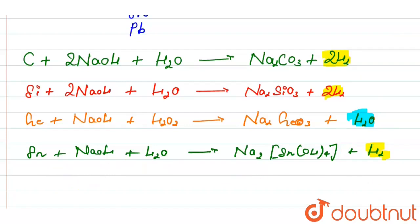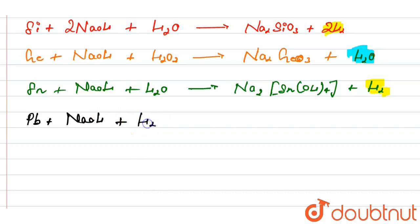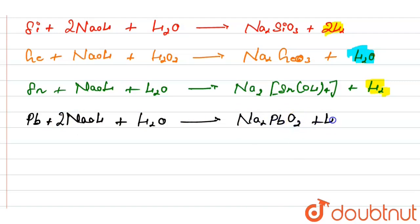Now we check the last option, Pb (lead). When lead reacts with NaOH, it gives Na₂PbO₂ and H₂. This reaction also involves hydrogen gas, so lead is not our answer.